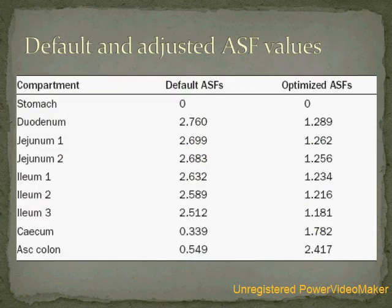The ASF values for different compartments are shown here. There are nine compartments starting from the stomach to the colon. In different compartments the permeability values are different, so the ASF values are also different. These values must be multiplied with the permeability determined using the cell lines.